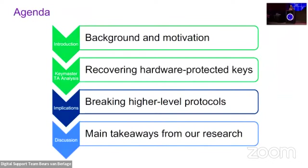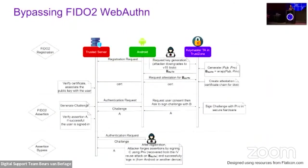Now let's see how we can use this to break higher level protocols. We'll start with an informal description of the FIDO2 web authentication standard, which is used for passwordless authentication and as a second factor. Web authentication uses a secure element to generate and use authentication keys; usually this secure element is an external security key, but we can use the Android TrustZone-based KeyStore instead. The attacker should not be able to extract the authentication keys and should not be able to clone the platform authenticator.